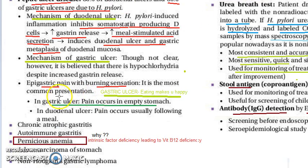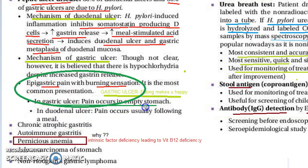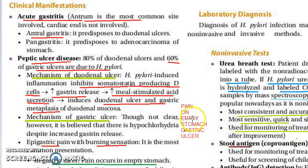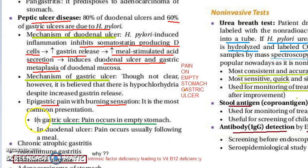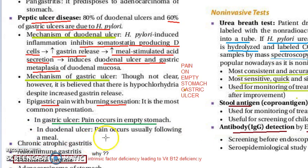The patient will present with epigastric pain — please note, epigastric pain with a burning sensation. The pain is on an empty stomach. If the pain is on an empty stomach, it indicates gastric ulcer. There are two types of peptic ulcers: duodenal ulcer and gastric ulcer. If there is pain following food, then it is a duodenal ulcer.